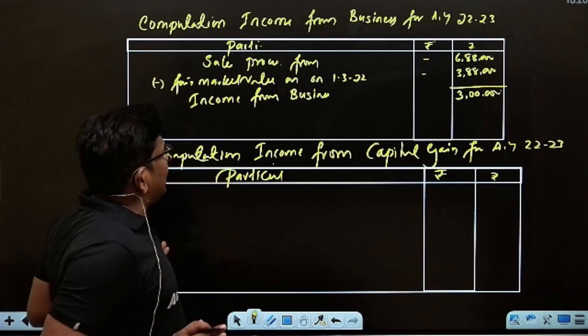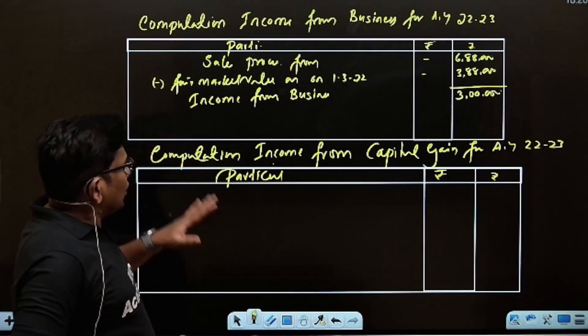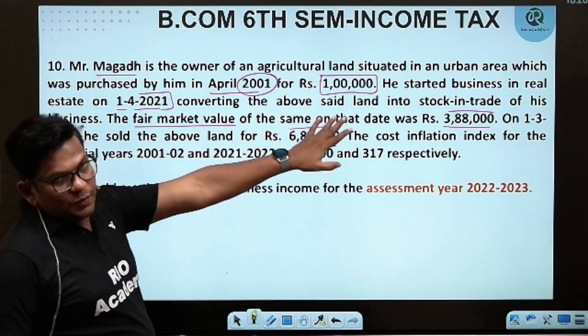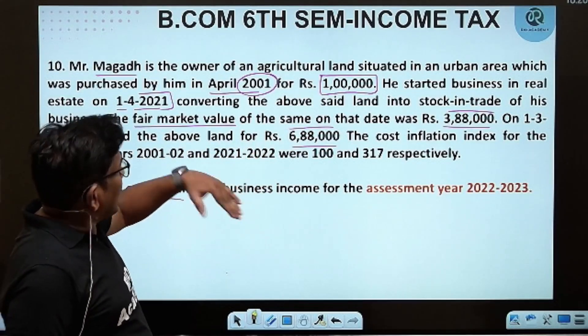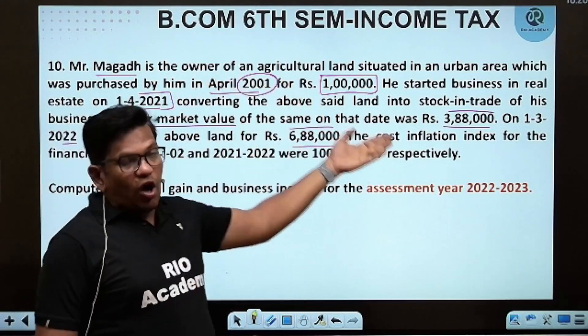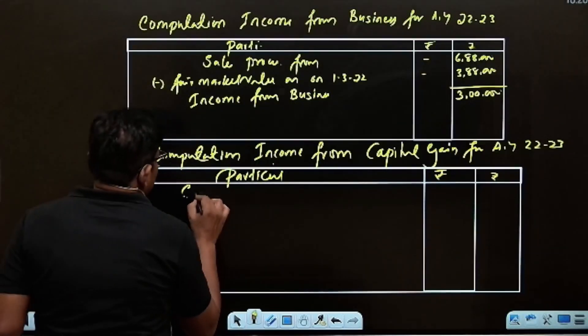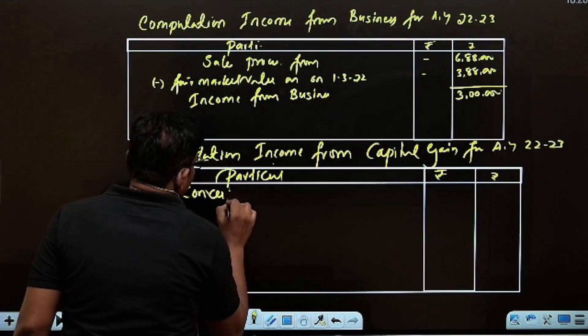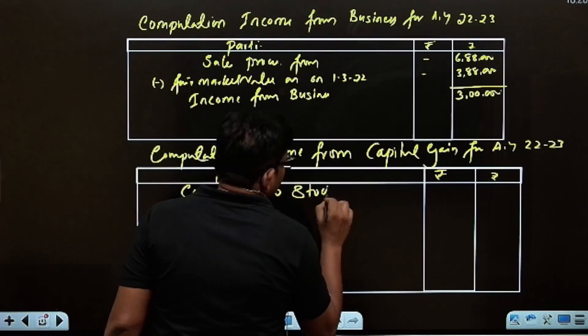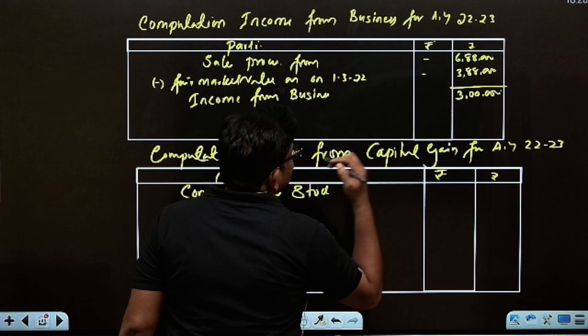Capital gains: under Section 17(1), the land was converted to stock-in-trade. The deemed sale consideration is 3,88,000 rupees. We need to compute the indexed cost of acquisition.